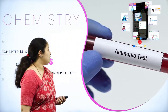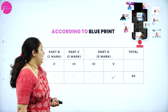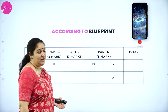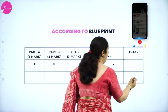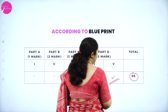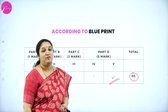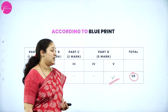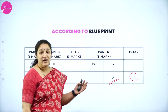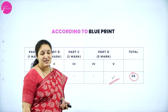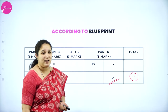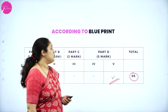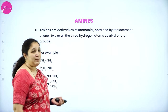We will see the weightage of the chapter. The weightage is very little — just five marks — and you can expect one question from part D in organic chemistry. That's the fifth main. It can be split as 3 plus 2, or it can be split as 2 plus 2 plus 1. So we will see what are Amines.